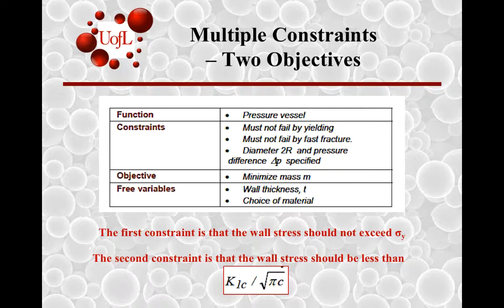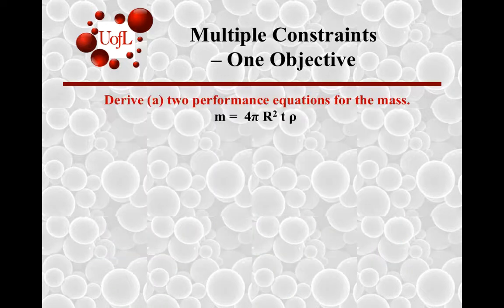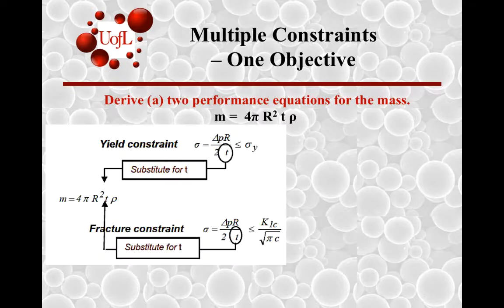For each of those constraints, we will minimize mass by first computing mass in a similar manner as we did for the earlier problem. Now you have mass as rho times the volume, which is 4 pi R squared times T. Then we go through two different constraints. On the top you have a yield constraint, and so the wall stress Delta P divided by 2 times T, the whole thing multiplied by R, should be at best equal to sigma y, the yield stress.